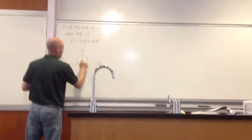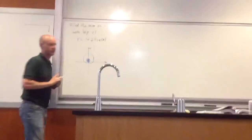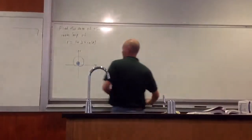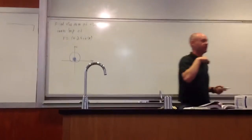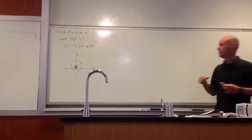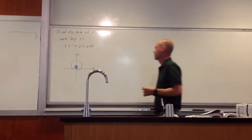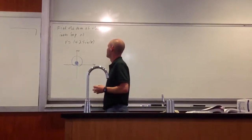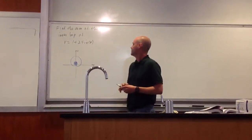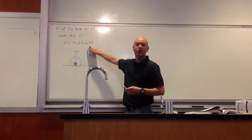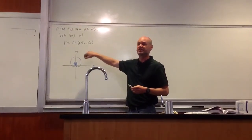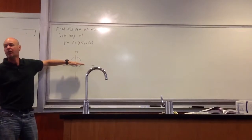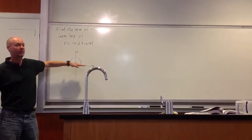The area that this is — so before, everybody got that with their calculator? So when theta equals zero, what is the radius? Meaning when I'm here, how far away from the origin is the graph going to be?